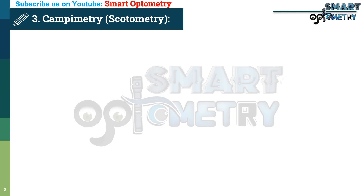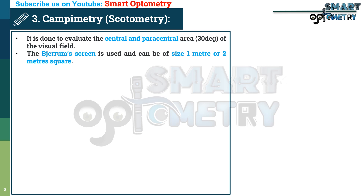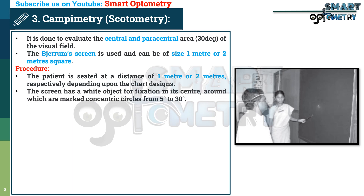Now, Campimetry or Scotometry. It is done to evaluate the central and paracentral visual field. The tangent screen is used and can be of size 1 meter or 2 meter square. Procedure: The patient is seated at a distance of 1 meter or 2 meters respectively depending upon the chart design. The screen has a white object for fixation in its center, around which are marked concentric circles of 5 to 30 degrees. The patient fixates at the central dot with one eye, the other eye being occluded.